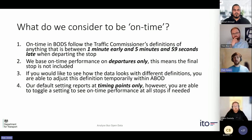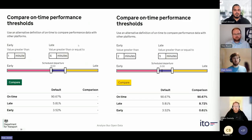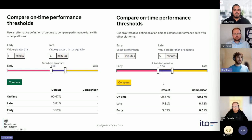Different systems may show different results because different definitions are being used. Within ABOD, we give you tools to temporarily adjust the definition to see what the data looks like. For example, rather than one minute early, a system might use one minute 59 seconds. Our default setting is to report on timing points only, but you can toggle to see on-time performance at every single stop. Here you can compare the default settings - one minute early up to six minutes late - against custom definitions.